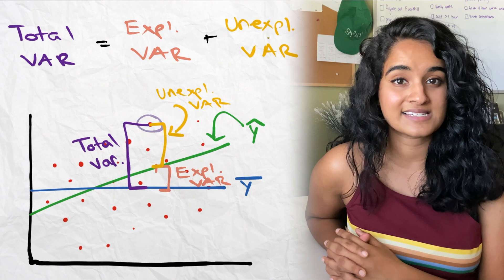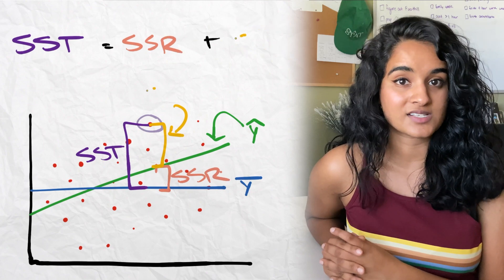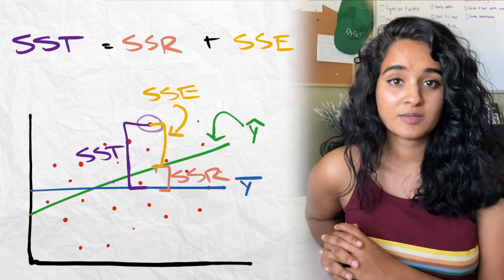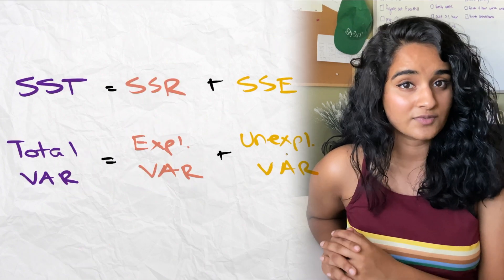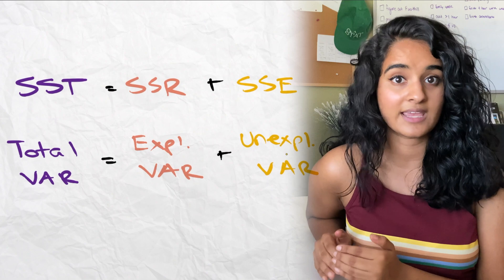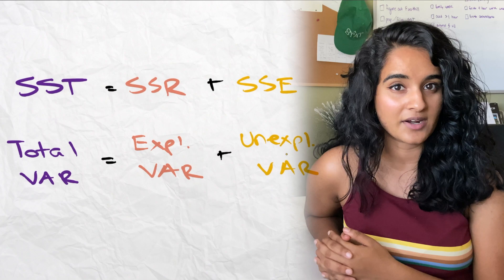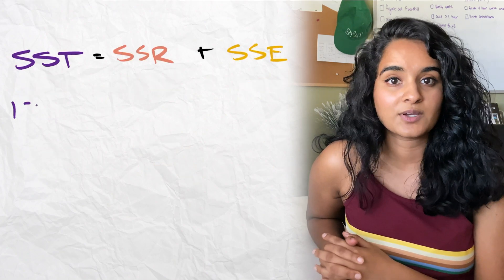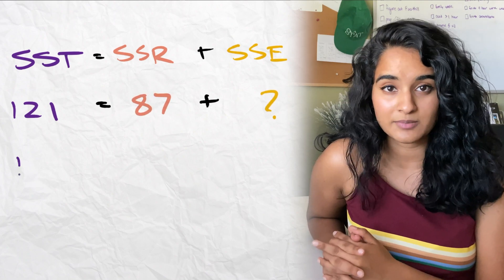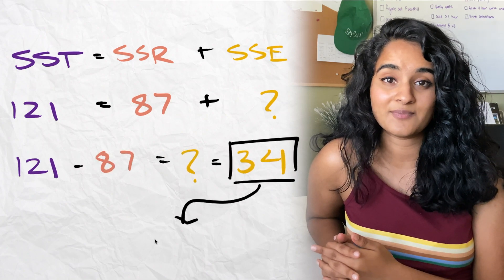This is exactly where SST, SSR, and SSE come in. Your total variation is SST, your explained variation is SSR, and your unexplained variation is SSE. The general formula is: total variation equals explained variation plus unexplained variation, or SST = SSR + SSE. If you have two of the three numbers, you can find the third. For example, if SST is 121 and SSR is 87, then SSE equals 121 minus 87, which is 34.